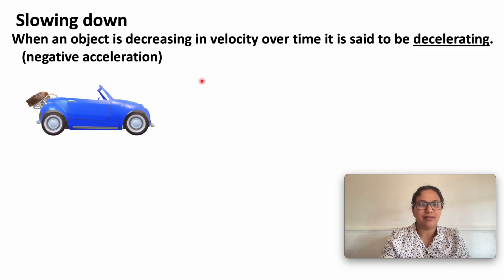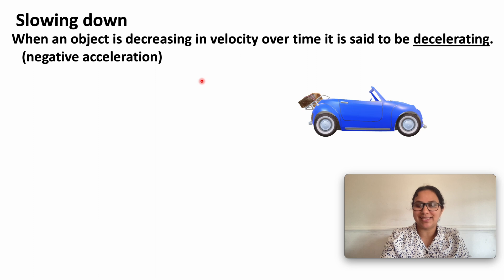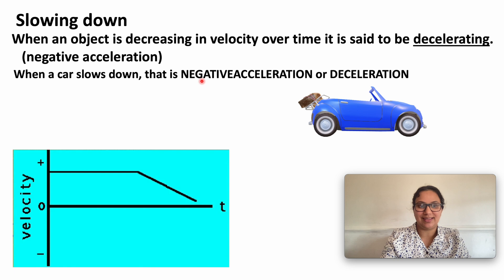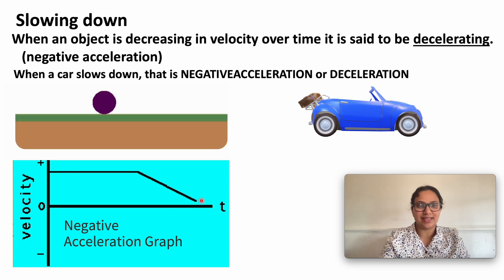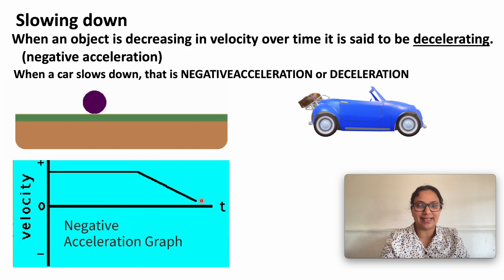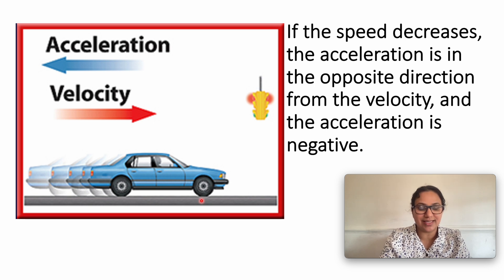The second type is slowing down. When a car slows down, the object is decreasing in velocity over time. Then it is said to be decelerating, or having negative acceleration. On the negative acceleration graph, you can see that speed decreases over time. For example, a ball comes to a stop — its speed decreases until it reaches the rest position. If the speed decreases, the acceleration is in the opposite direction from the velocity, so the acceleration is negative.